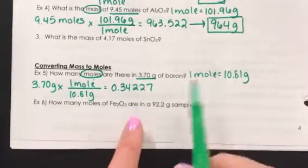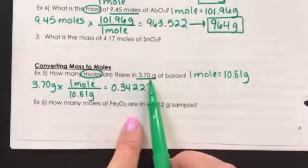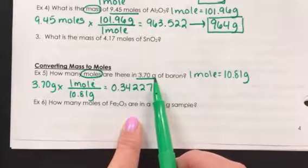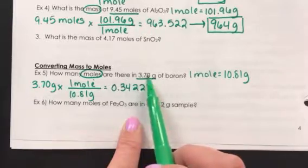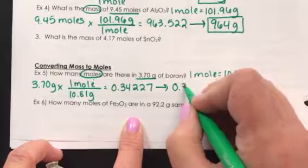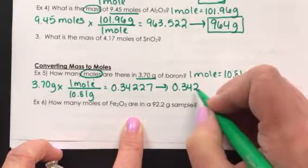Again, for significant figures, this 0, because it's at the end of the number and it's after a decimal, does count as a significant figure. So this has three significant figures, so we should round our answer to .342 moles.